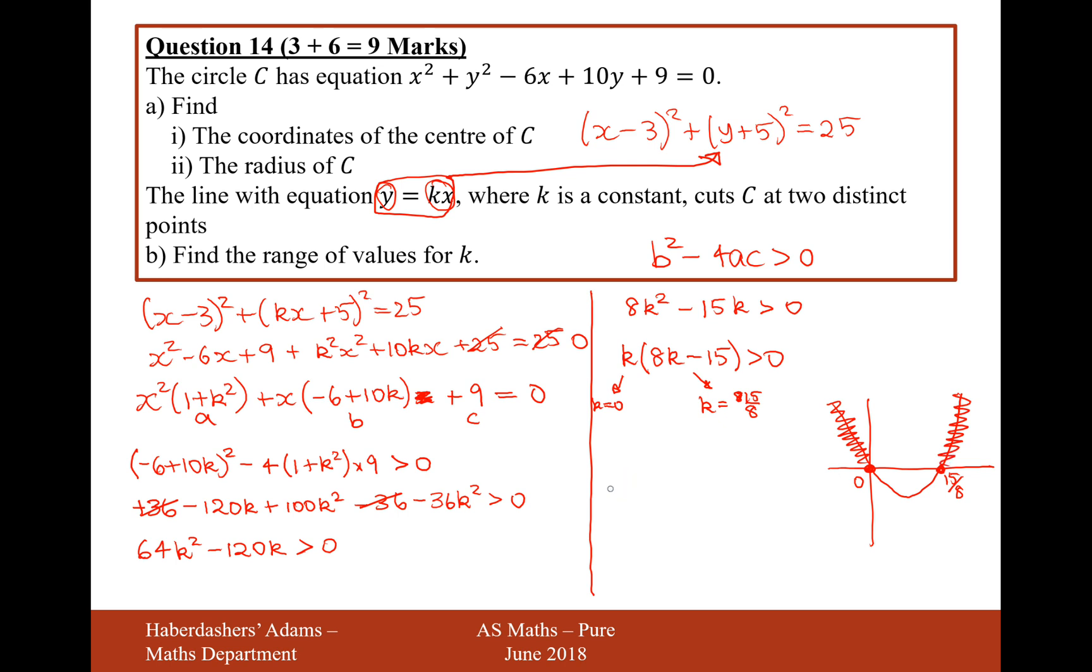That's going to be when k is less than 0 and k is more than 15 over 8. We've got two different regions here. They need to be separated with a little comma. k is less than 0 and k is greater than 15 over 8. That's the range of values for k. That's the answer for question 14, worth nine marks in total there. Let's now move on to the final question of the paper, question 15.